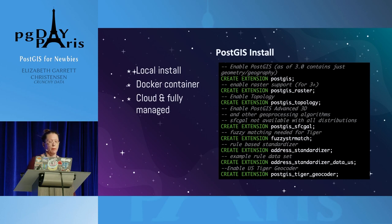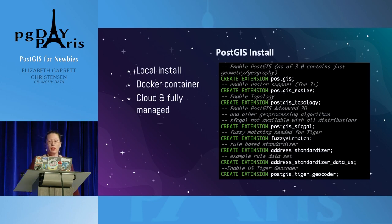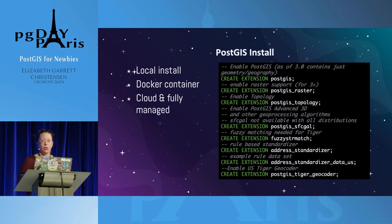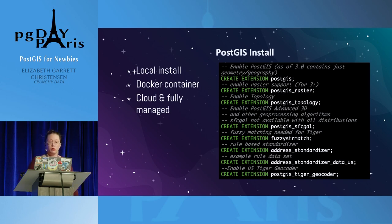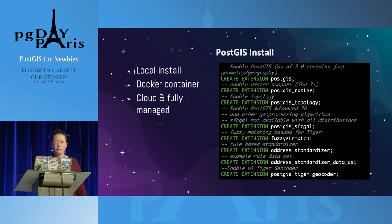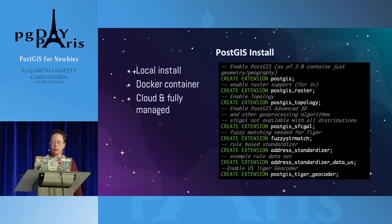They recommend a list of extensions to install as well. The raster extension gives you capabilities to export raster graphics. The topology extension lets you create topological objects that have faces, edges, and nodes. The SFCGAL extension lets you do some 2D and 3D stuff. And then fuzzy string match and the rest of the list is related to standardizing addresses and things like that.